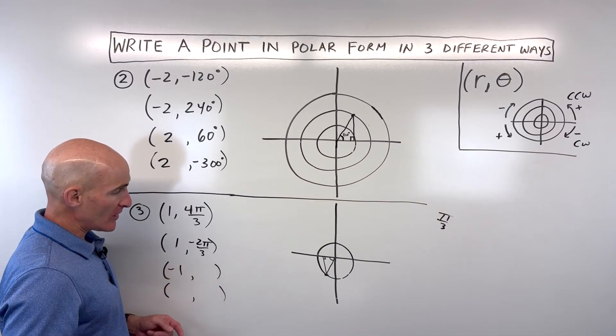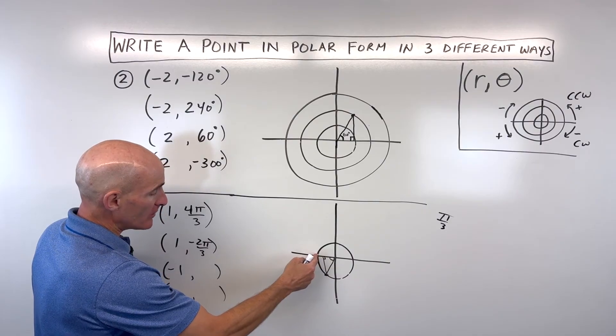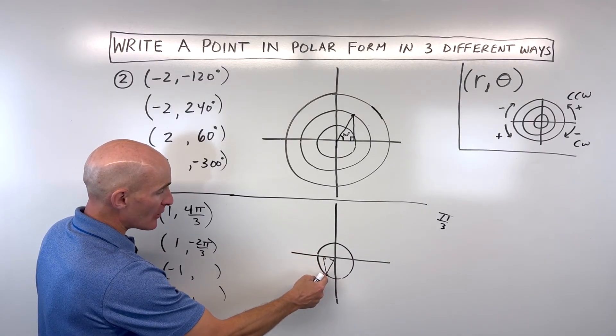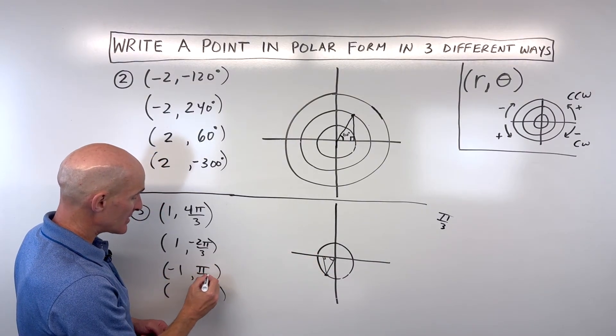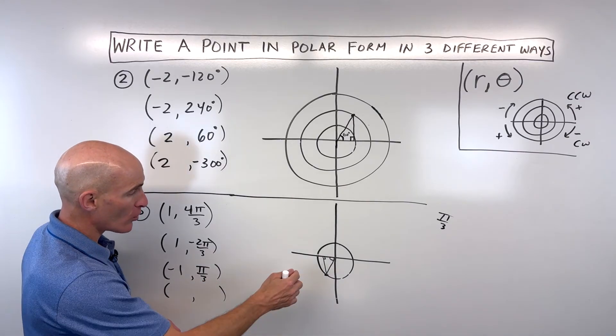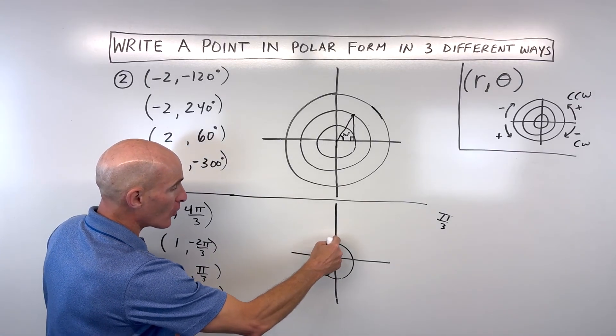Let's say we make it a negative r value, negative one. We would go left one, and we can rotate counterclockwise pi over three. That's positive because we're going counterclockwise.